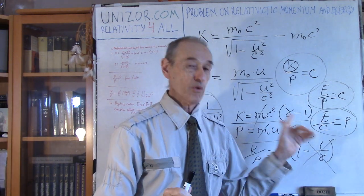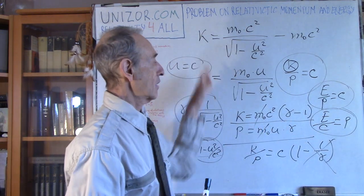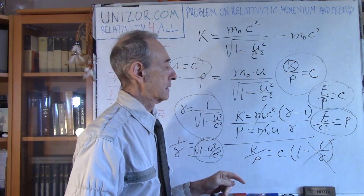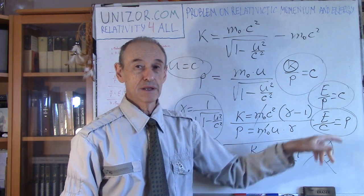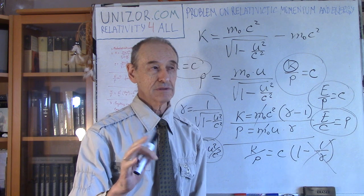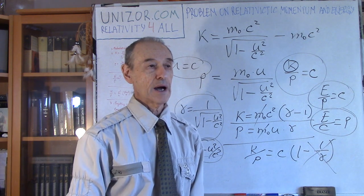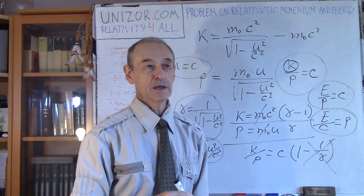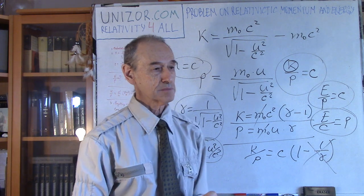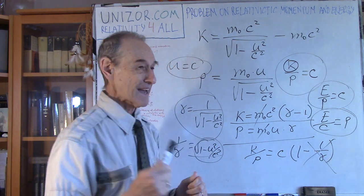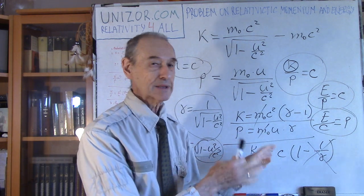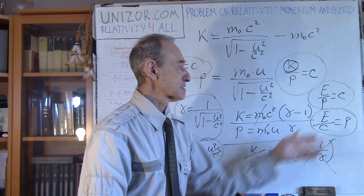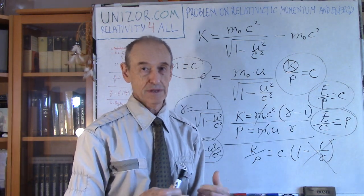This formula we derived from relativistic expressions was actually obtained at the end of the 19th century, around the 1800s, as a consequence of research done by the physicist Poynting. It was based more on electromagnetic properties of light and Maxwell equations. So this formula predates the relativistic theory.